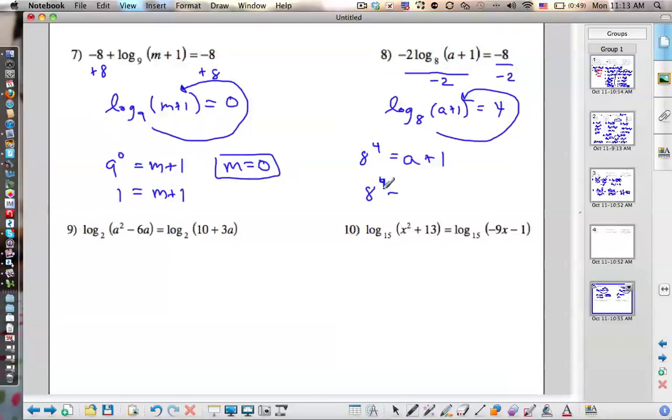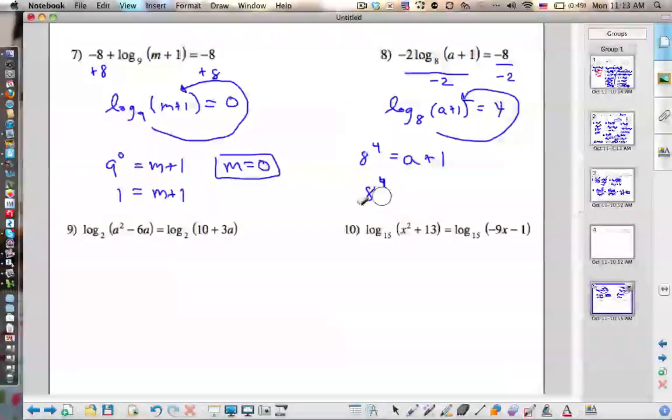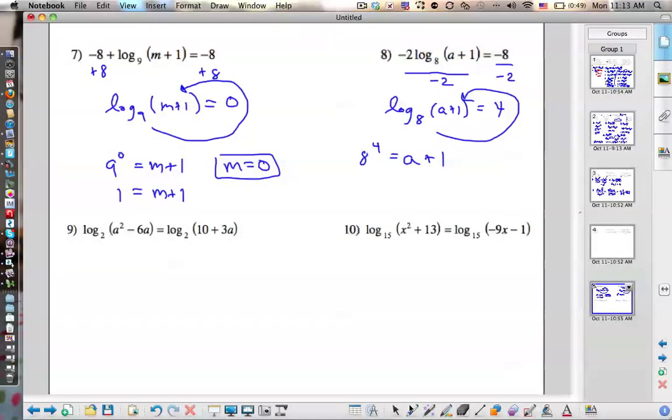8 to the 4 minus 1 equals a. You could simplify that. I don't know what 8 to the 4th is. 64 squared. 64 times 64.